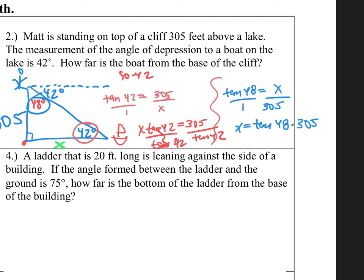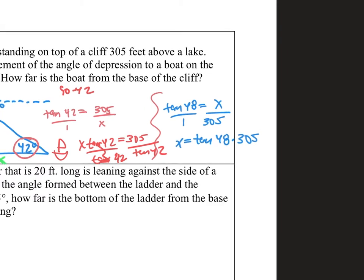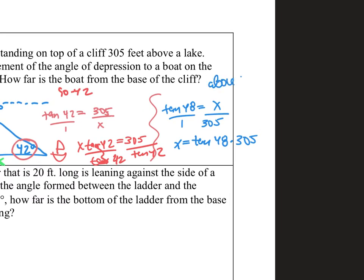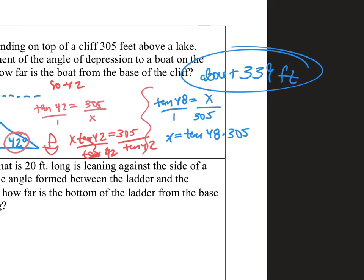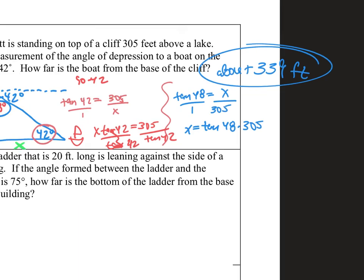305 divided by tangent of 42 gives about 339. And tangent 48 times 305 gives the same exact thing. So depending on how you want to deal with angles of depression and elevation, it's totally up to you. Angle of elevation for me is always going to be in the bottom right-hand corner. If I were you, I would use the angle of depression as your angle of elevation, or you can do 90 minus and put it in the top corner. It does not matter.